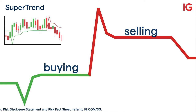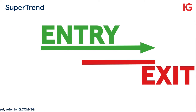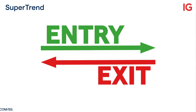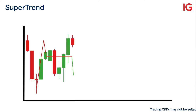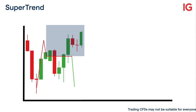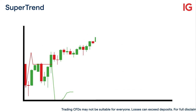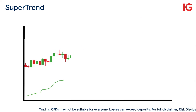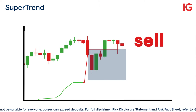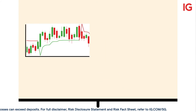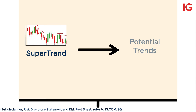When the supertrend line is red, traders may look for selling opportunities. The supertrend indicator provides entry and exit signals based on the direction of the trend. When the price crosses above the supertrend line, it is a buy signal, and when the price crosses below the supertrend line, it is a sell signal.